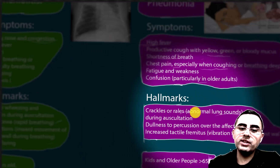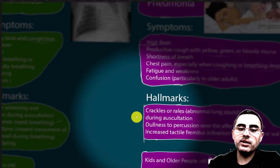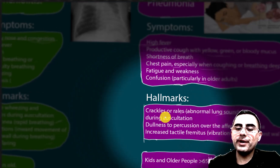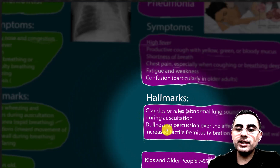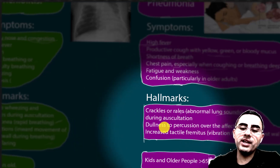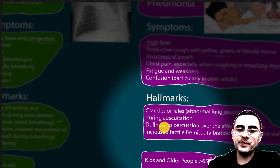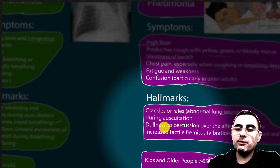In the case of pneumonia, hallmarks are crackles during auscultation, dullness during percussion over the affected area — usually a specific area of the lung — and increased tactile fremitus, which means increased felt vibration on the chest during breathing.